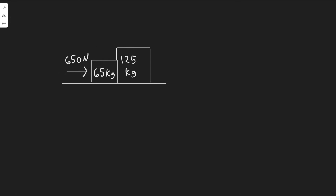Obviously we have the force of gravity on each of these. I'm going to call this box 1 and this is box 2. The force of gravity on box 1 would be m1g, and on box 2 it would be m2g. Then we have the normal force pointing up on each of them — Fn1 and Fn2. We also have the force of friction because the coefficient of kinetic friction is 0.18, so we're going to have a force of friction acting in the opposing direction, which I'll call FF.